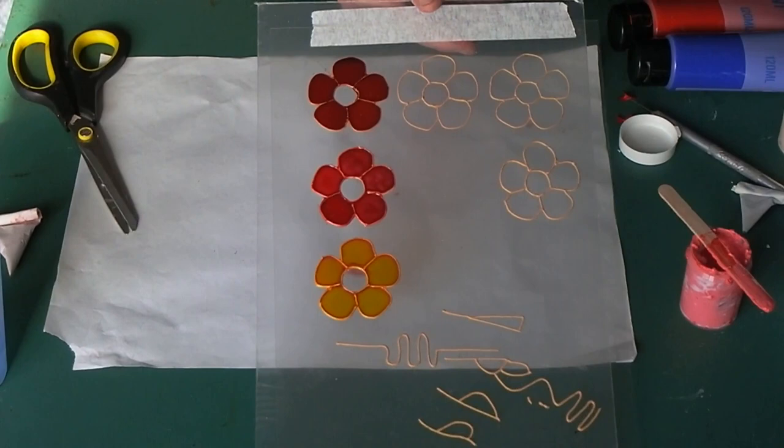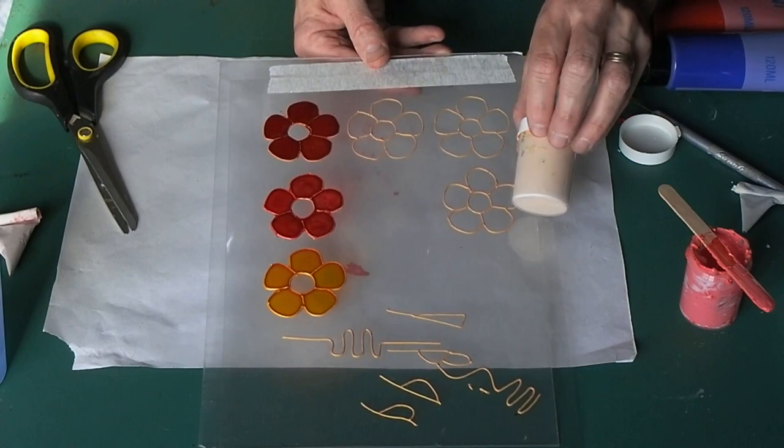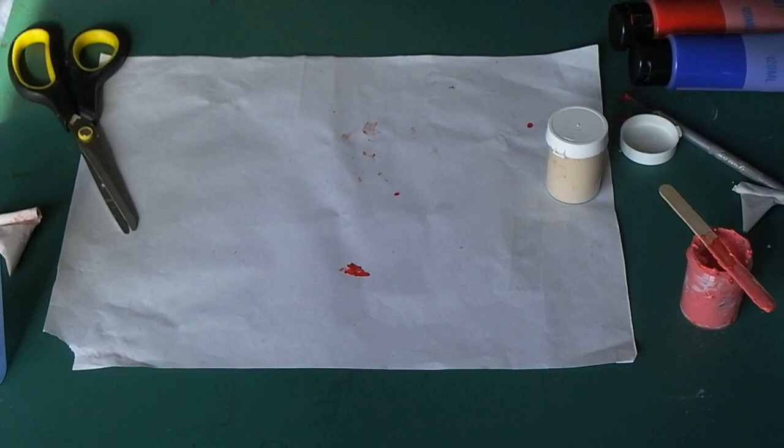That's it used with ordinary glass paints, that's a gold outliner. And as you can see even though the gold in the pot is quite pale, it goes to a nice gold color when it's dried.